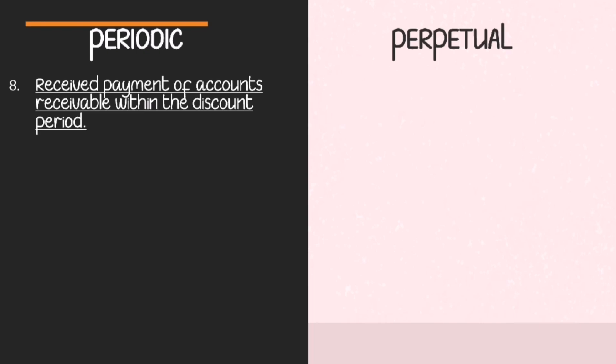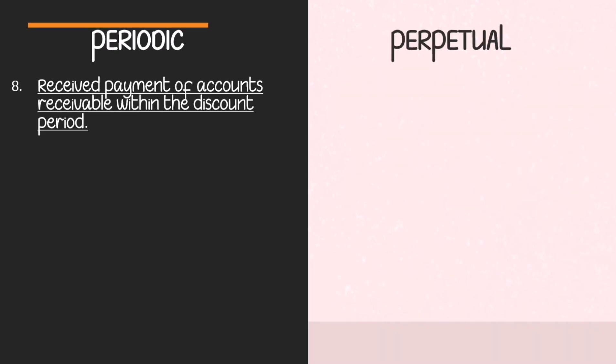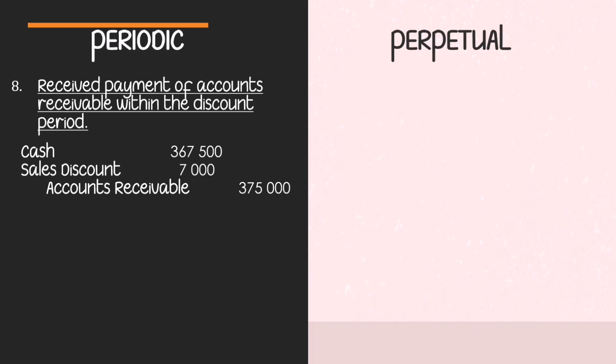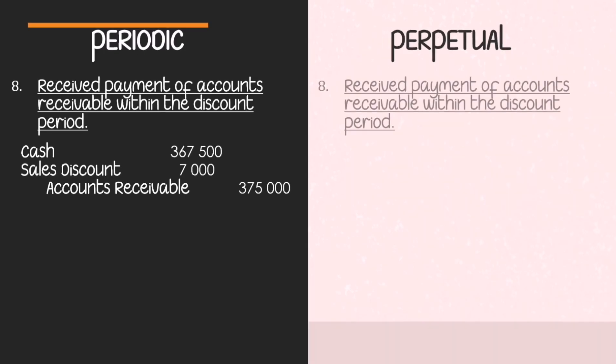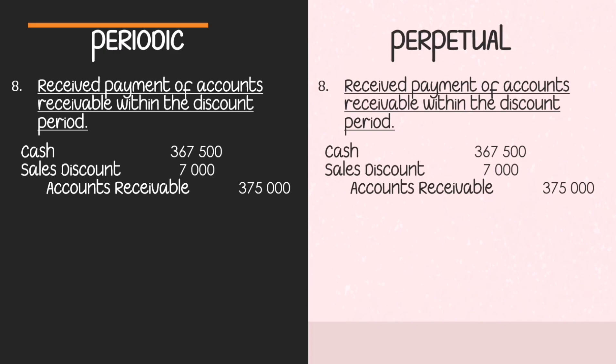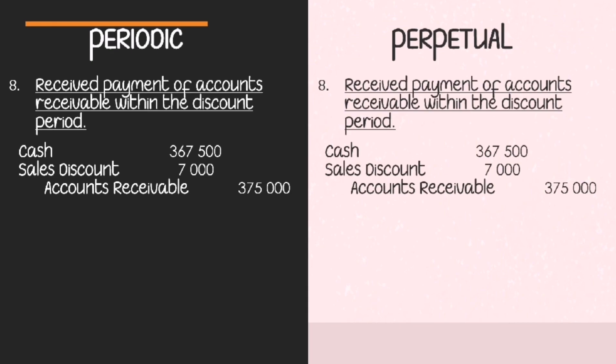Last transaction: receipt of payment of accounts receivable within the discount period. The accounts receivable balance of 400,000 is reduced by the sales return of 25,000, leaving 375,000. A 2% discount gives a sales discount of 7,500. Cash received is 367,500. The entry under both systems is: debit Cash 367,500, debit Sales Discount 7,500, credit Accounts Receivable 375,000.